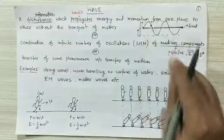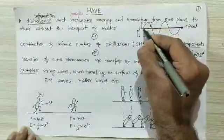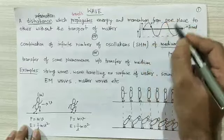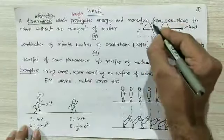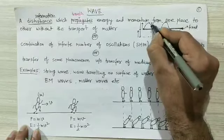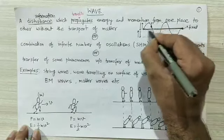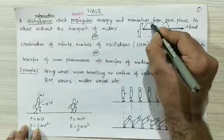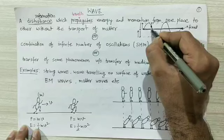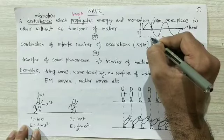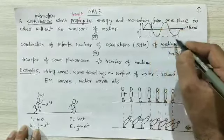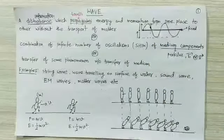The free end particle is doing simple harmonic motion. Any particle on the string is also doing SHM. This is the mean position — from mean position it goes to extreme up, that is amplitude, and again comes to mean, and again from mean to amplitude, and from amplitude to mean. So all particles on the string are doing simple harmonic motion.